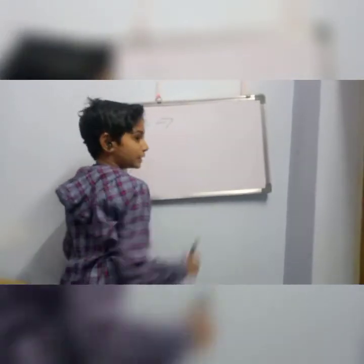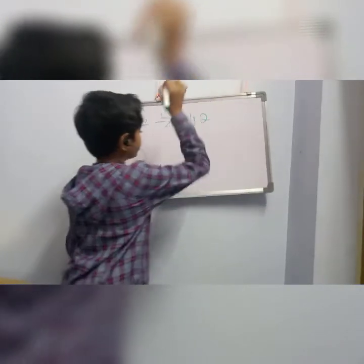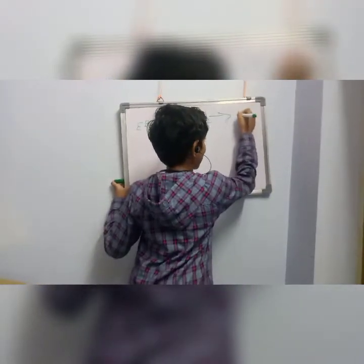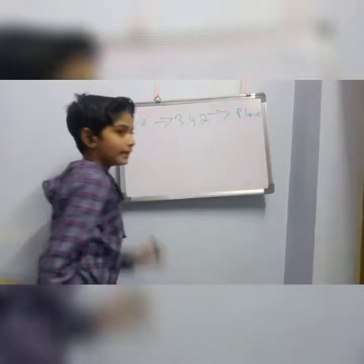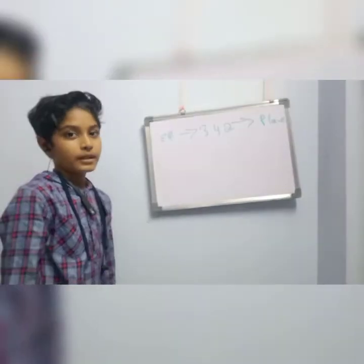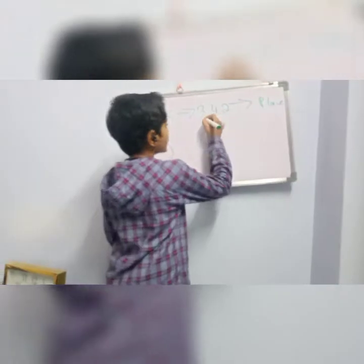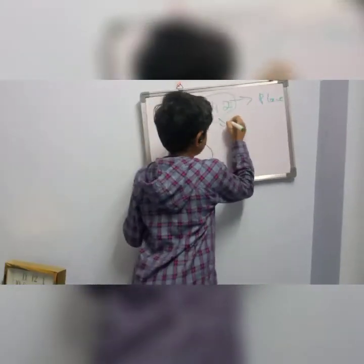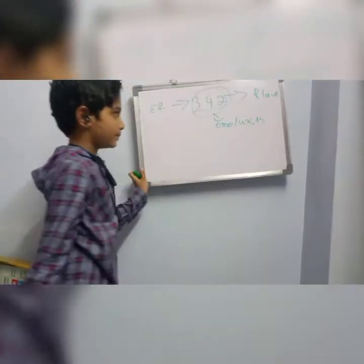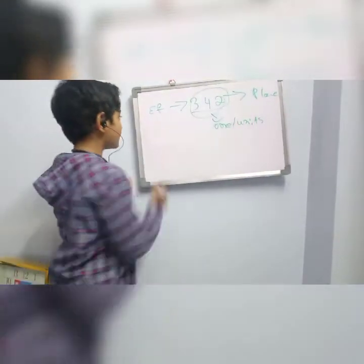For writing the expanded form, first we need to write a number. This number was 342. For writing the expanded form, first we need to divide the places. In the last class I mentioned the periods. The starting of the places always starts with a one.